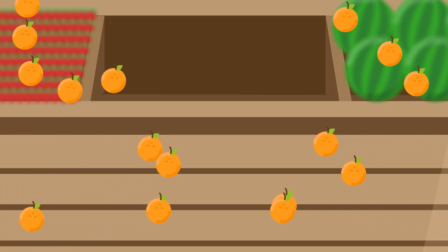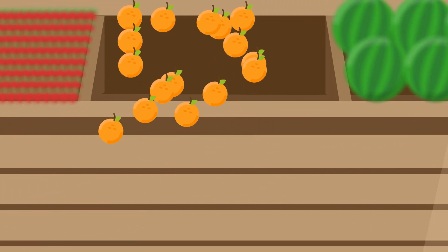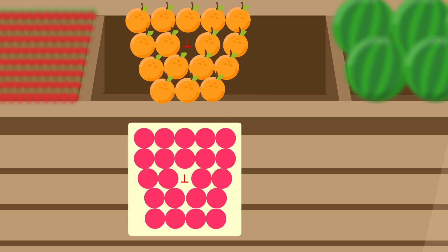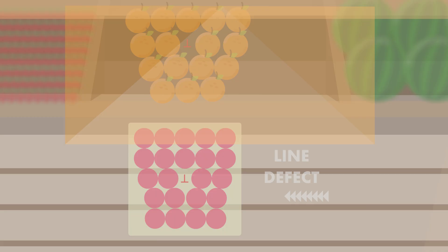The shopkeeper was arranging the fruits in a hurry, and the particular column of fruits was misarranged, which is known as line defect.